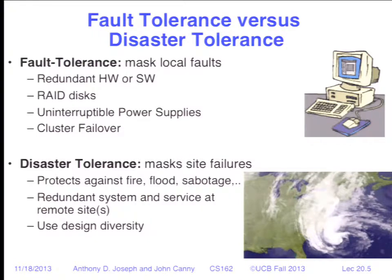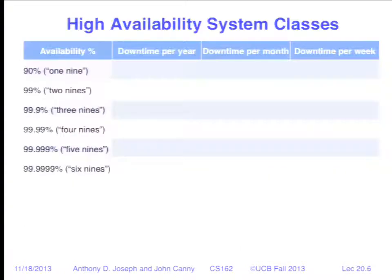Another very important definition is system availability, meaning a customer can use the system — not necessarily that all customers can. Availability is divided into availability classes called 'nines' based on the number of nines in the percent availability. The first class is one nine — 90% availability. That seems like a really good number, right? 90% is more than most of the time.